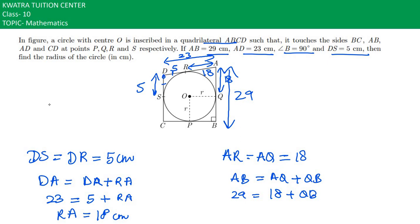QB we don't know. QB is equal to 29 minus 18 cm, which would be 11 cm. QB is equal to 11 cm.